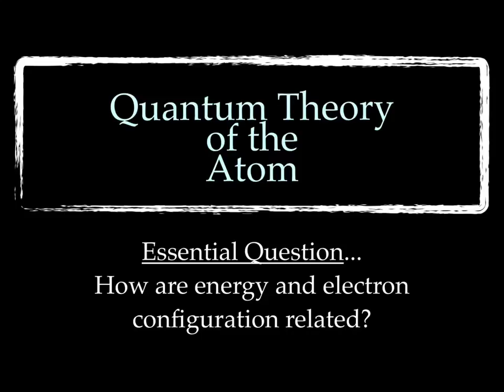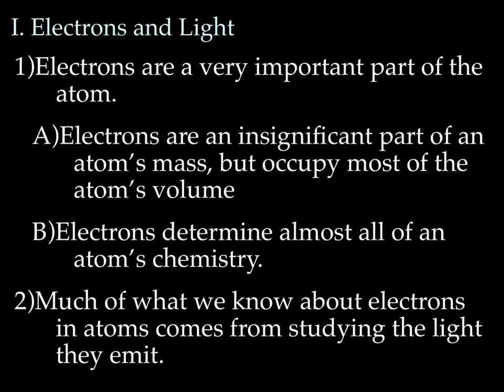Make sure you answer this question in your summaries. Alright, electrons and light. Electrons are a very important part of the atom. Which is actually kind of a silly statement because from the atom's point of view, all of the subatomic particles, the electrons, the protons, and the neutrons are important. But as chemists, we really like those electrons.